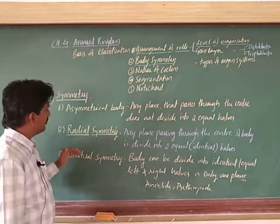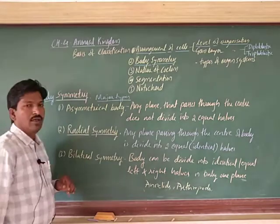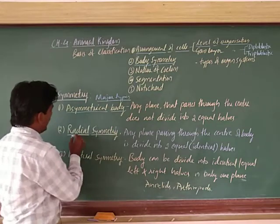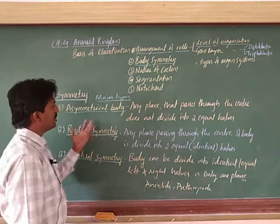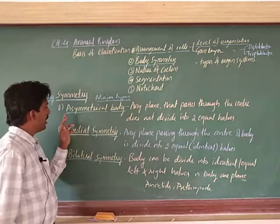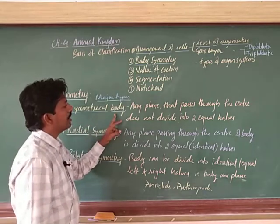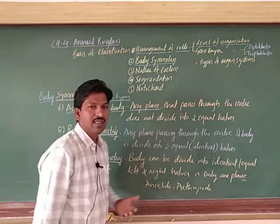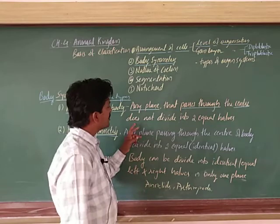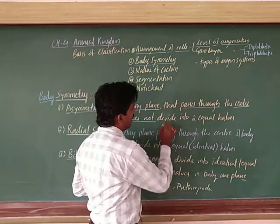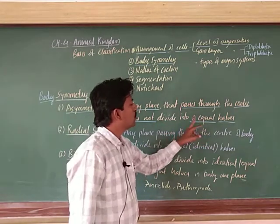There are three major types of symmetry in animals. First is asymmetrical body. Second is radial symmetry. Third is bilateral symmetry. Asymmetry - 'a' means absence of symmetry. An asymmetrical body means any plane passing through the central axis of the body does not divide it into two equal halves. The halves are not equal - they are not identical parts.